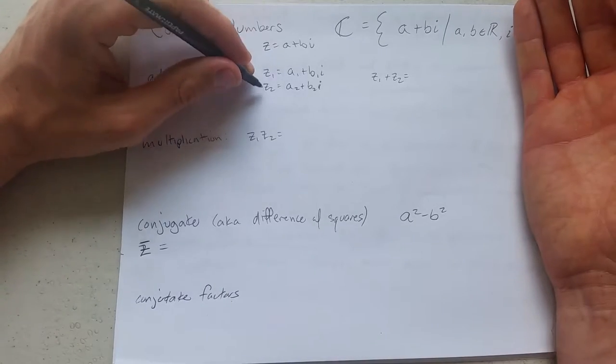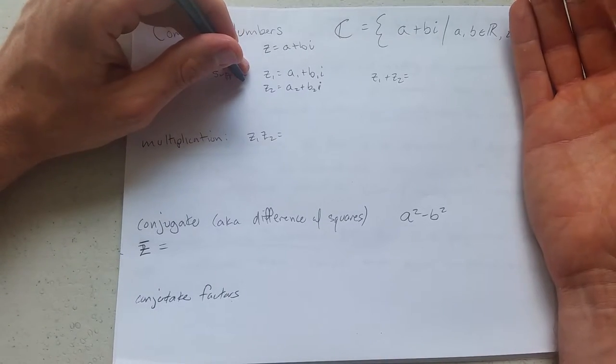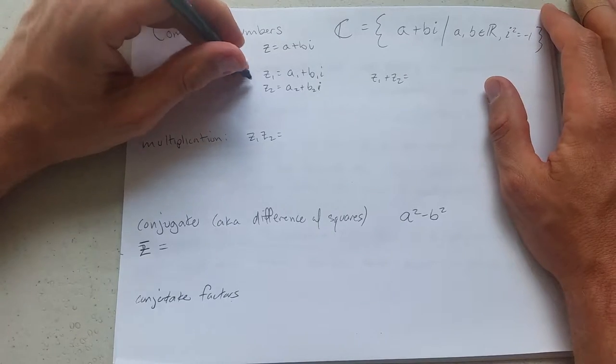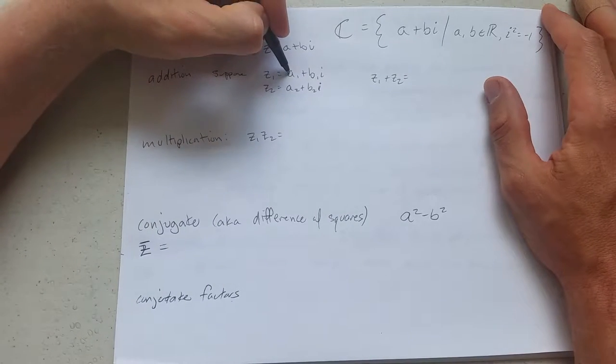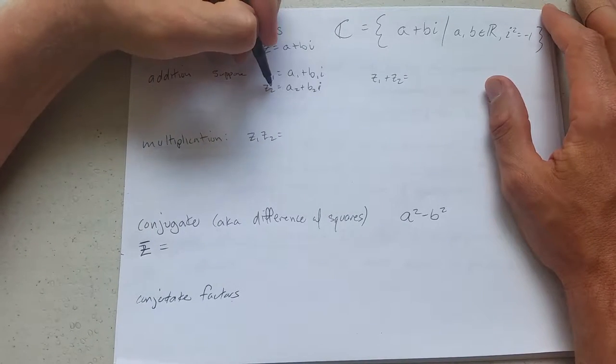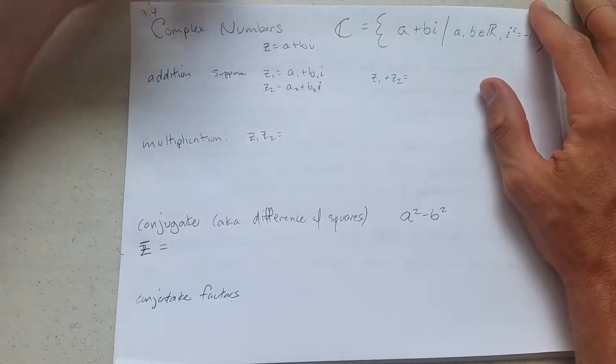We'll start out with addition. How do you add two numbers? I'm going to call the first number z1, the second number z2. So the first number will be a1 plus b1i, second number a2 plus b2i. How do we add them?